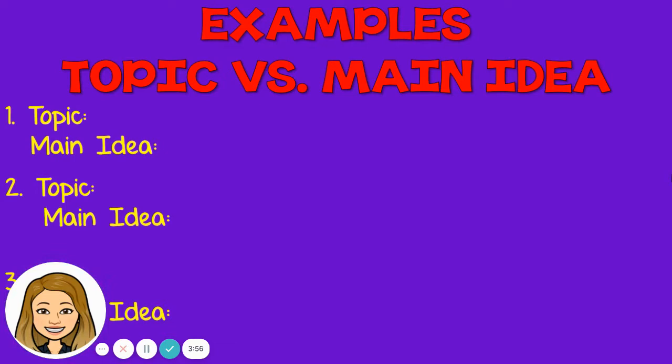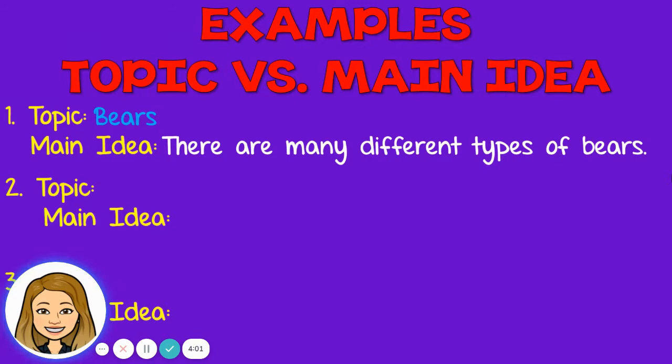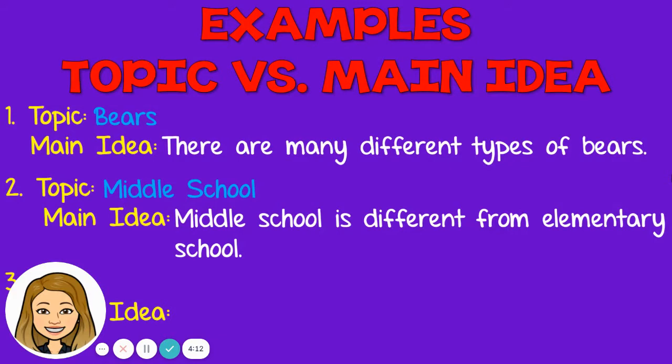Let's look at examples of topics versus main idea. Example one: your topic could be bears, but the main idea is there are many different types of bears — so in that book you're going to find out all about the different types of bears. Here's another example: your topic could be about middle school, but your main idea is middle school is different from elementary school, so in that story you're going to hear all the differences of middle school versus elementary school.